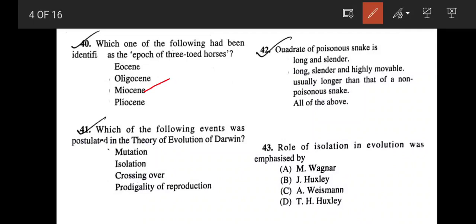Which of the following events was postulated in the theory of evolution of Darwin? Mutation, isolation, crossing over, or prodigality of reproduction? The first postulate of Darwin was prodigality of reproduction. Animals or organisms can reproduce at geometric fashion, at a higher rate. The correct answer would be prodigality of reproduction.